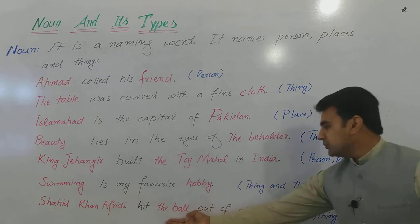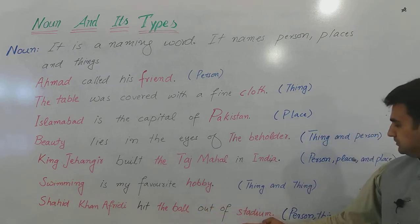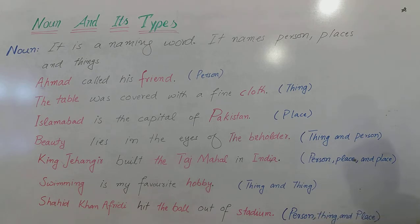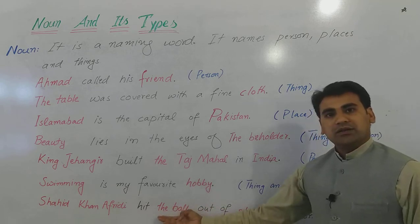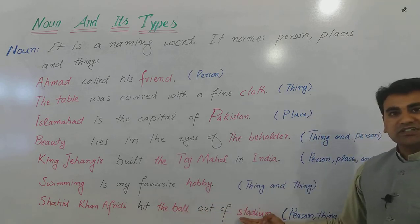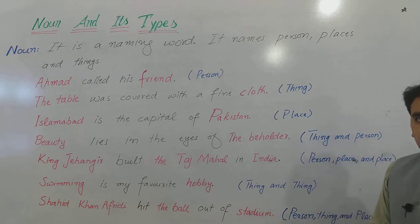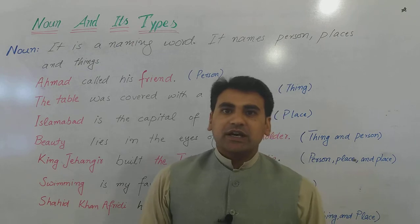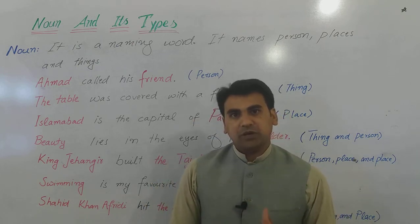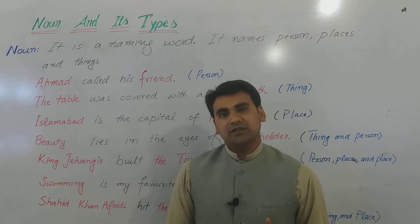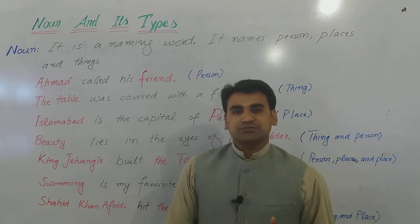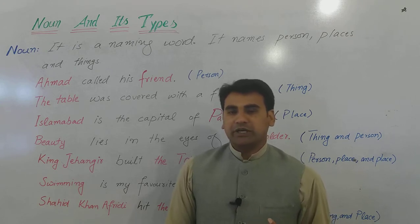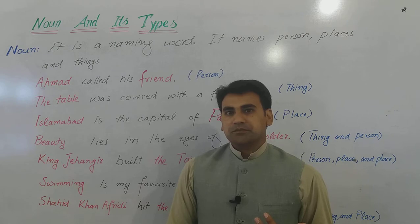Anger — ghussa — we cannot see it, but still it exists and can be felt. Such things that are felt, that are ideas, nazariyat — just like patriotism, hubb-ul-watani — it is the name of a feeling, a nazariya. So such nouns that we cannot perceive with the five senses, but we can feel them, think about them, and imagine them — these are called abstract nouns. Beauty is one of them.